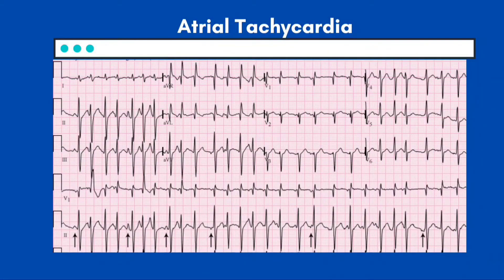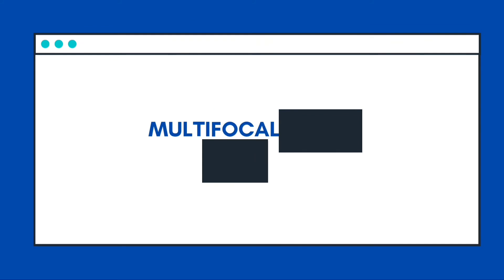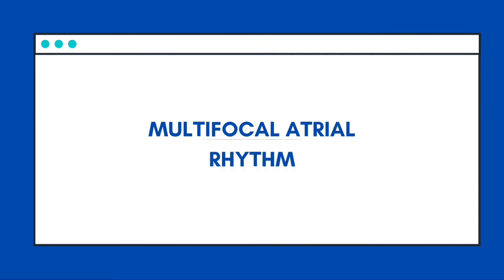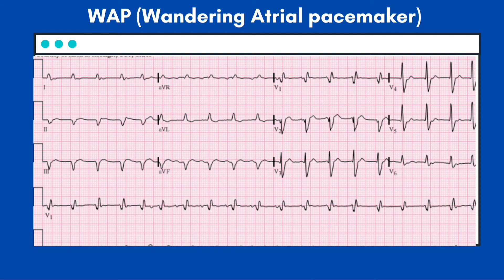Atrial tachycardia features regular automatic tachycardia of ectopic origin, often with an atrial rate of 180 to 240 per minute — similar to ectopic atrial rhythm but faster. Wandering atrial pacemaker has a rate of 60 to 100 per minute from multiple ectopic atrial foci, evidenced by a minimum of three different P wave morphologies on the 12-lead ECG, with variable PP, PR, and RR intervals. Unlike atrial fibrillation, discrete P waves are identifiable.